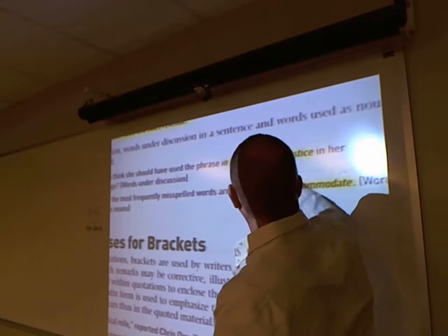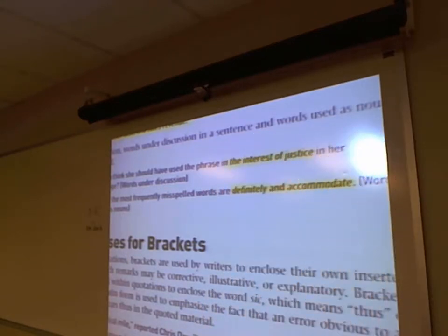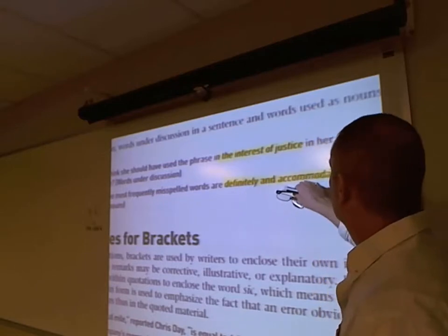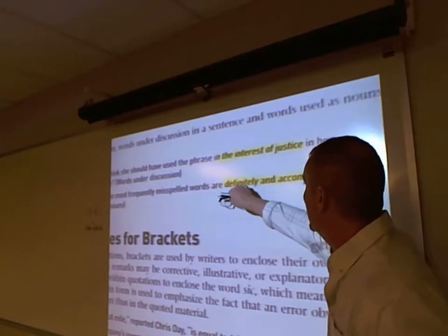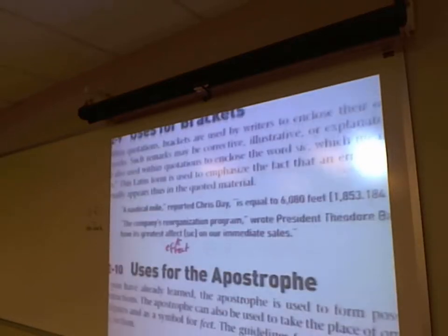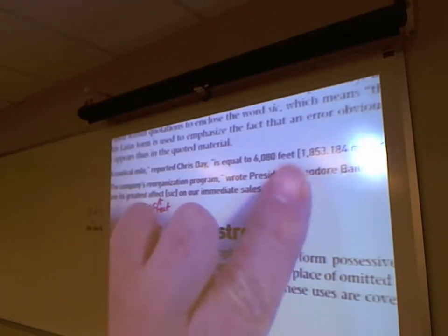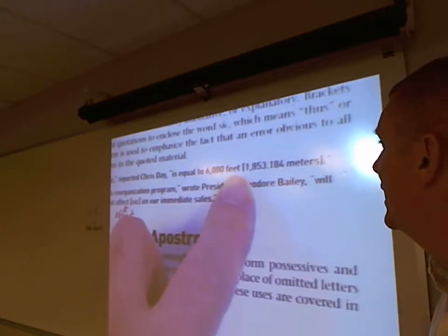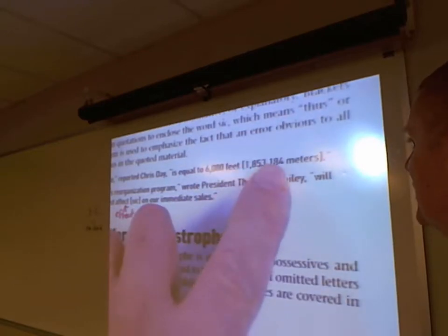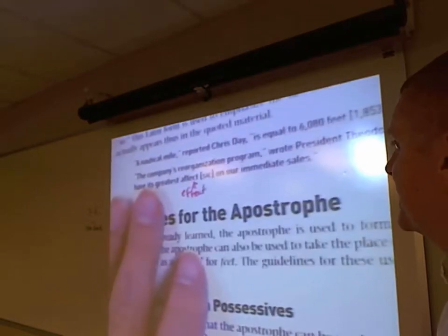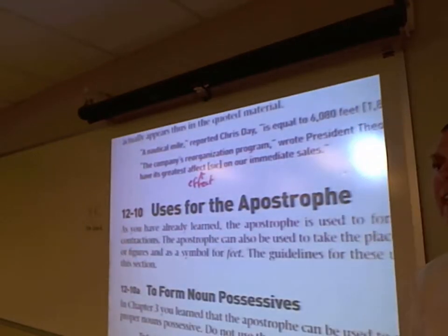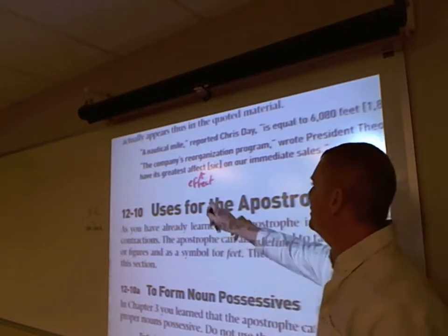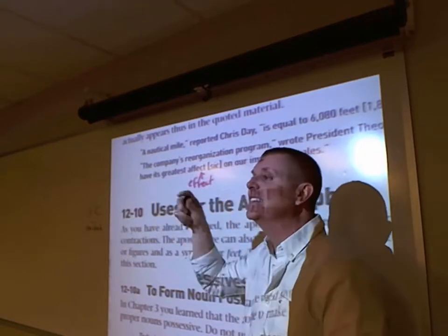When do you use brackets? If converting from feet to meters, brackets work well there. Within quotations, brackets are used to enclose the writer's inserted remarks — corrective, illustrative, or explanatory. Brackets are also used within quotations to enclose the word sic, S-I-C, which means 'thus' or 'so.' This Latin term emphasizes that an error actually appears thus in the quoted material — used when whoever quoted the material misspelled a word, like 'afect' instead of 'effect.'